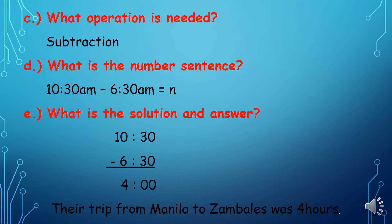We have here 10:30 a.m. minus 6:30 a.m. From the right side, 0 minus 0 is equal to 0. 3 minus 3 is equal to 0. 10 minus 6 is equal to 4. So, the answer is their trip from Manila to Zambales was 4 hours.